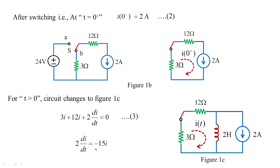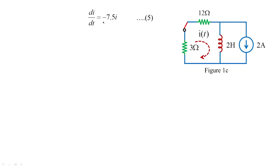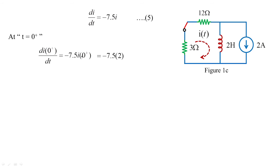From KVL: 2·di/dt = −15i, treated as equation 4. Therefore di/dt = −7.5i, treated as equation 5. We need di/dt at t = 0 plus: di/dt|₀₊ = −7.5 × i(0+) = −7.5 × 2 = −15 amperes per second. This is the value of di/dt at 0 plus, treated as equation 6.